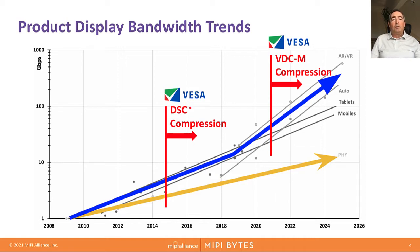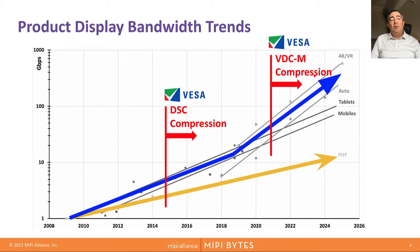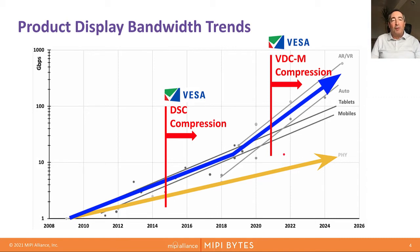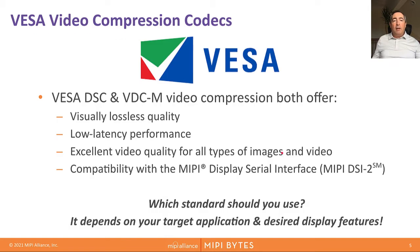As display bandwidth requirements kept increasing, VESA identified a need for a second compression standard that would offer additional compression capability, and VDCM was announced in 2018. Again, the MIPI Alliance was the first organization to adopt VDCM in MIPI DSi2. We expect that DSC will coexist with VDCM for several years to come. Since early 2021, you can find VDCM in some high-end application processor products — the ones that require an additional level of compression to deal with ever-increasing display bandwidth.